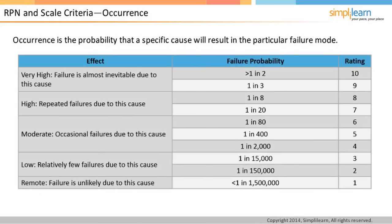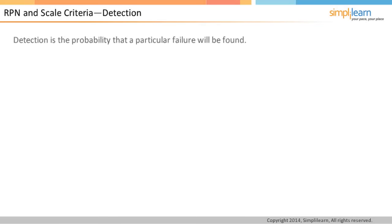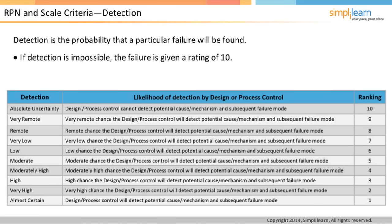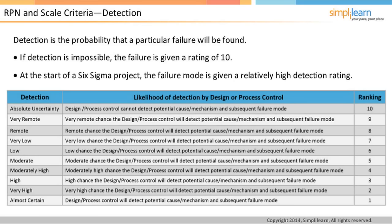Detection is the probability that a particular failure will be detected. The rating here differs from severity or occurrence: higher the detectability of a failure, lower is its rating. This is because if a failure can easily be detected, there would be less or no damage. For example, if detection is impossible, the failure is given a rating of 10. At the start of a Six Sigma project, the failure mode is given a relatively high detection rating.